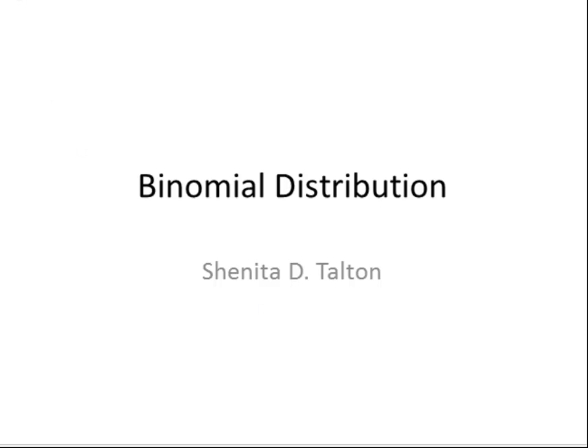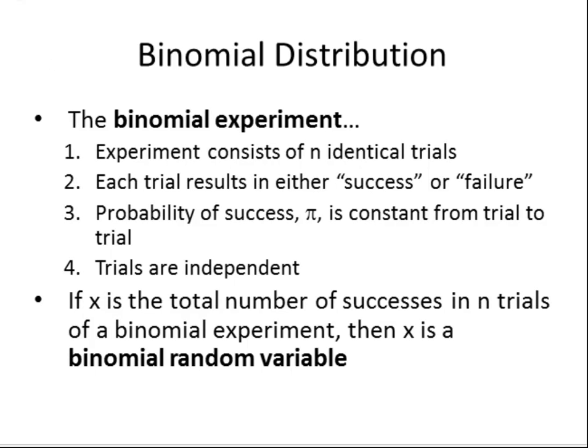Today we're going to talk about the binomial distribution. A binomial distribution is an experiment that consists of n identical trials, and each trial can result in either a success or a failure. The probability of success is constant from trial to trial — this little pi is the symbol for the probability of success — and each trial will be independent of each other.